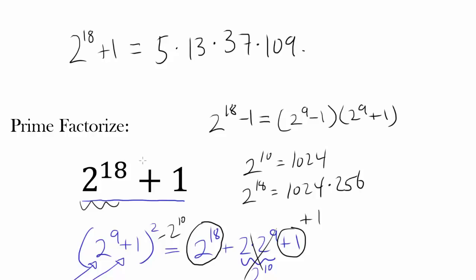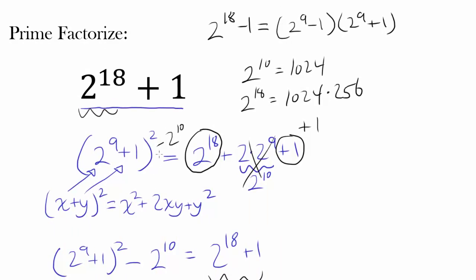And the main thing to get out of this video is that we can force a difference of squares to be made by using the fact 2 to the 18th plus 1 looks very similar to 2 to the 9th plus 1 squared and subtracting 2 to the 10th, which gets us difference of squares, which we can factor and reduce and work with.